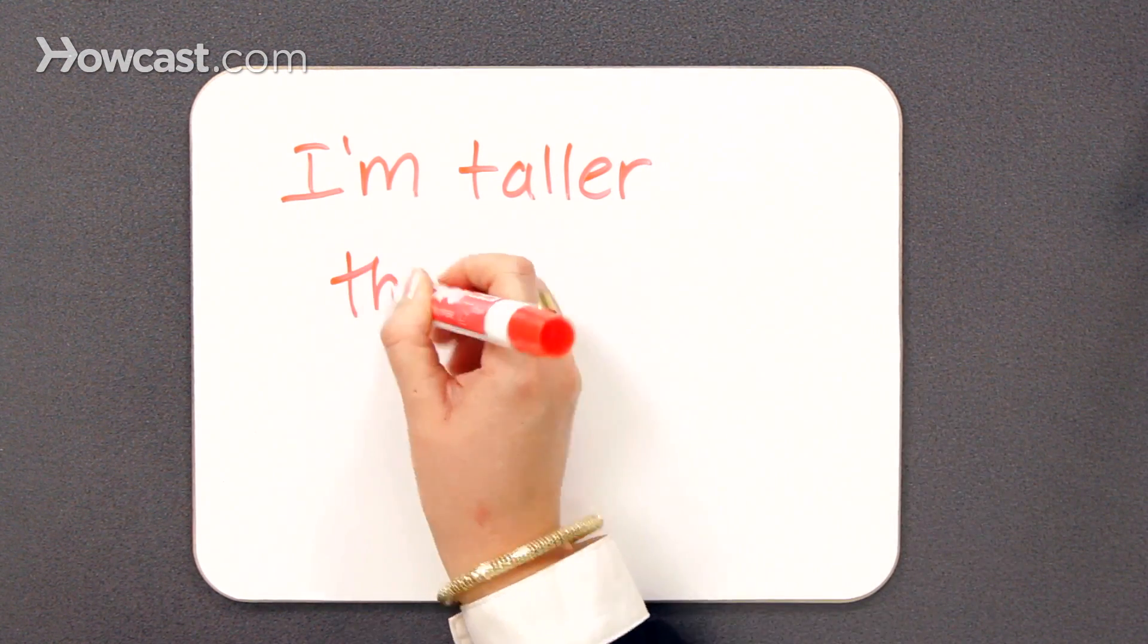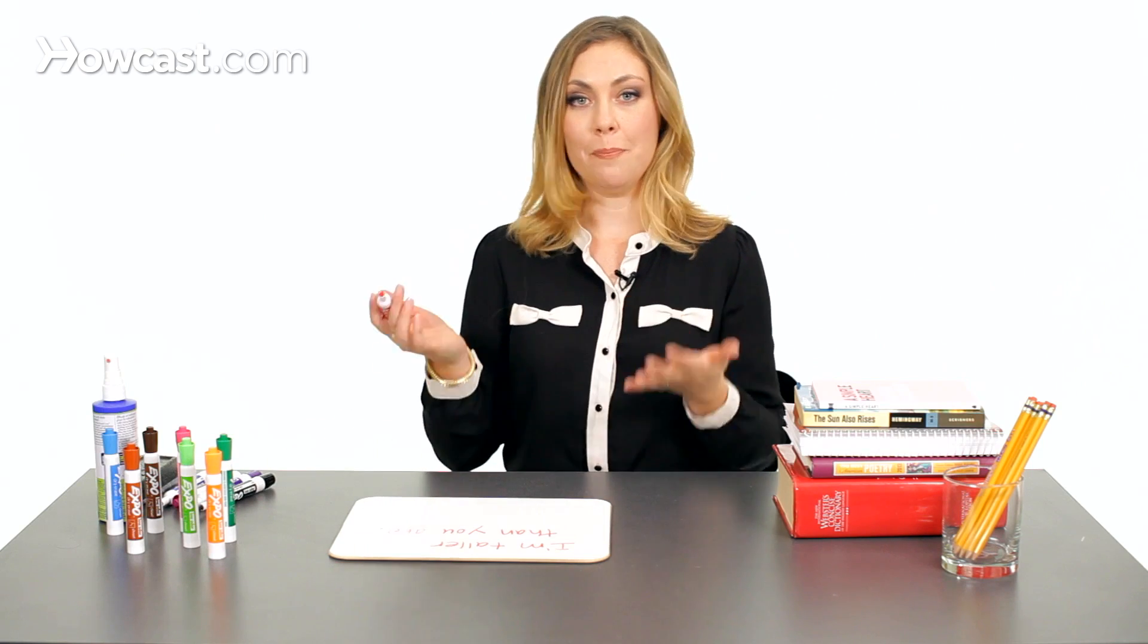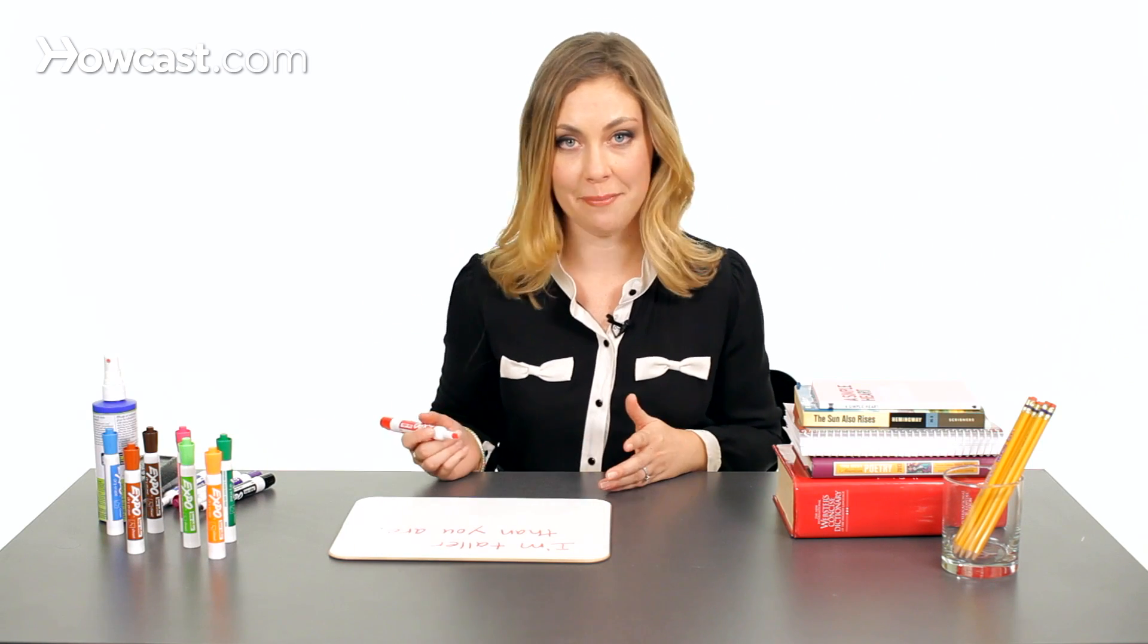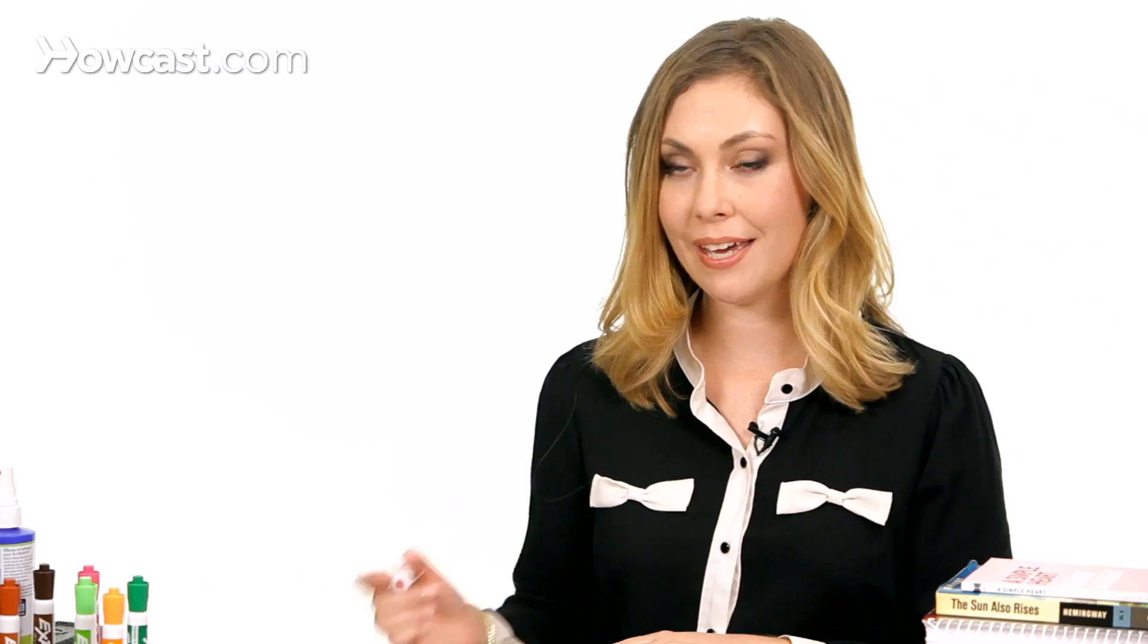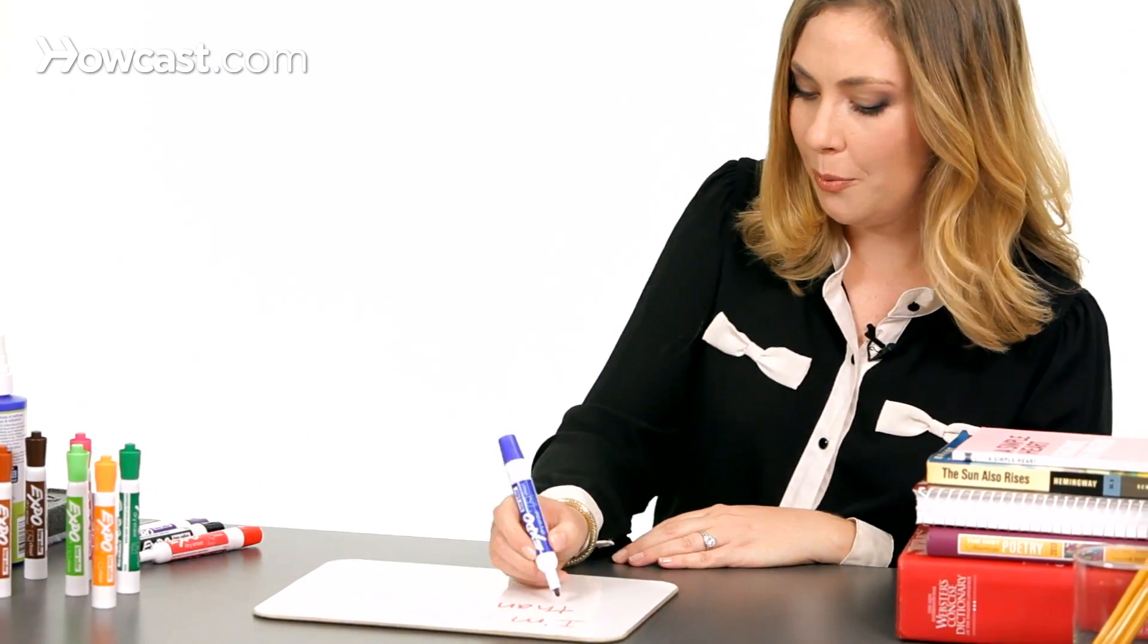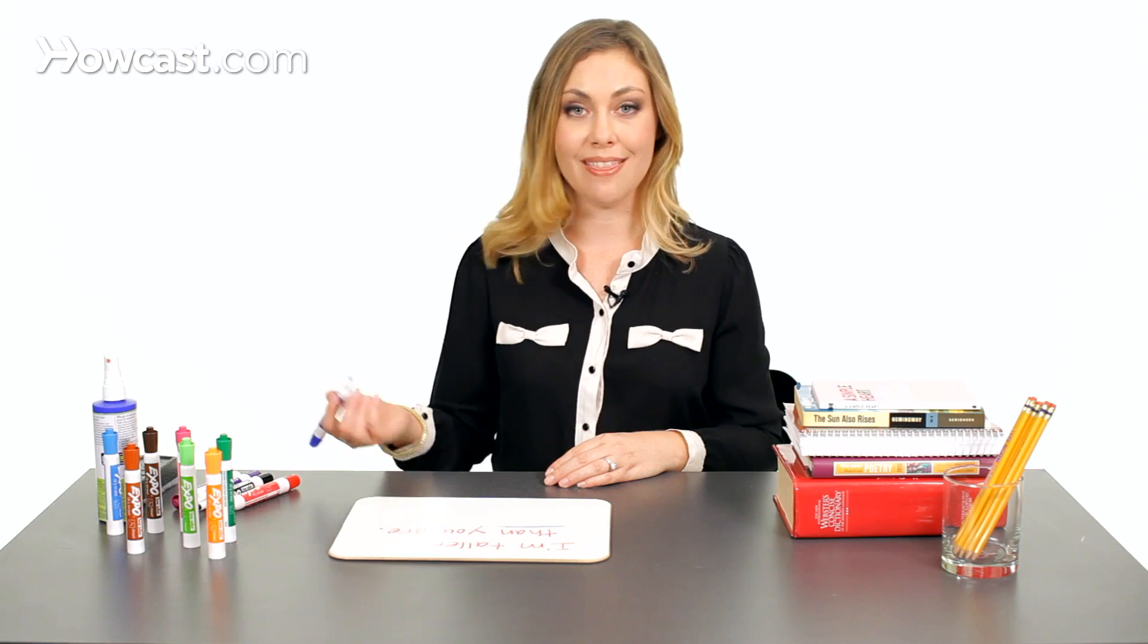But if I want to say something like, I'm taller than you are, well now I'm making a comparison. There's no time element here. I'm simply saying that I possess one quality more than you do. Because it's a comparison, we use the word than with an A. And that's the difference between then and than.